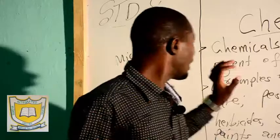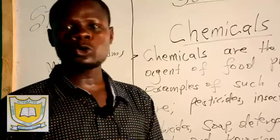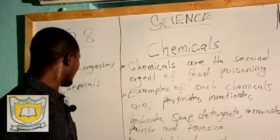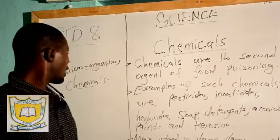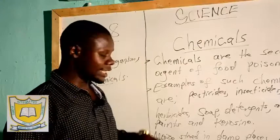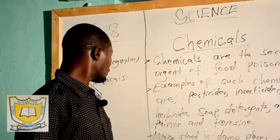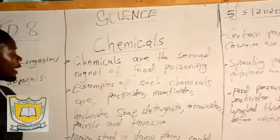Last time I described how microorganisms cause food poisoning and we talked of three main microorganisms which were bacteria, viruses, and fungi — the main microorganisms that can cause food poisoning. We also talked about the vectors, those that are carrying the microorganisms from where they are to the food. Today I want to start the second part, which is chemicals.